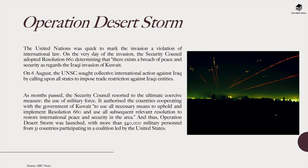Kuwait had very powerful allies, as shown in Operation Desert Storm. The United Nations was quick to mark the invasion a violation of international law. On the very day of the invasion, the Security Council adopted Resolution 660, determining that there existed a breach of international peace and security. On 6th August, the UN Security Council called upon all states to impose trade restrictions against Iraqi entities. As months passed, the Security Council authorized the use of military force, permitting countries cooperating with Kuwait to use all necessary means to restore international peace. Thus Operation Desert Storm was launched with more than 540,000 military personnel from 31 countries in a coalition led by the United States.